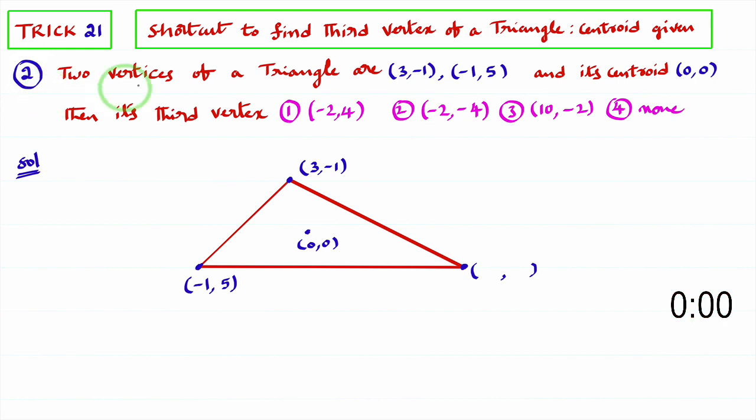You observe this second problem. Two vertices of a triangle are given as 3, minus 1 and minus 1, comma 5. And centroid of the triangle is given as 0, comma 0. Then we need to find the third vertex.